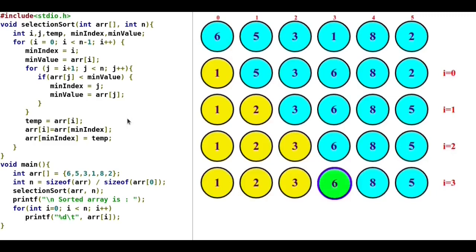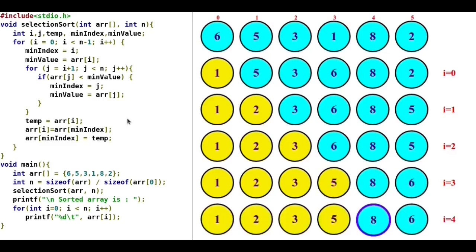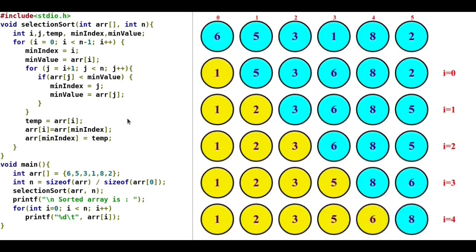The fourth pass starts. The first element 6 is considered as the minimum. j starts from index 4, and the minimum found is 5. So 5 is swapped with 6. Then the fifth pass starts with i equals 4. The first element 8 is the current minimum, but the minimum is updated to 6. So 6 is swapped with 8. After completion of the fifth pass, all elements are sorted.